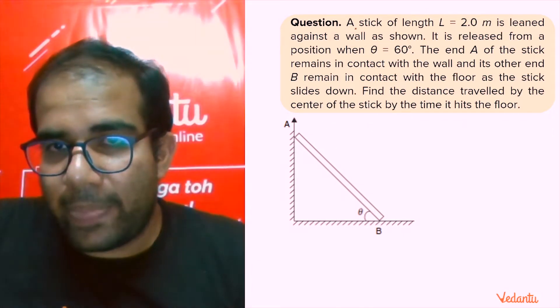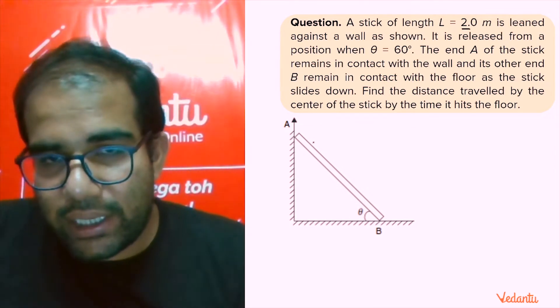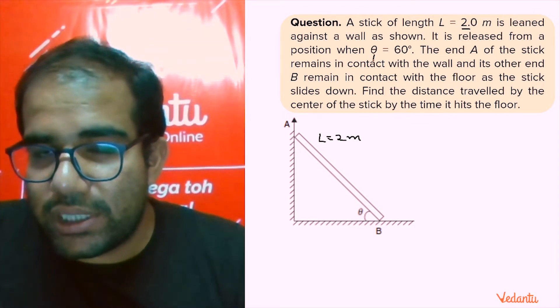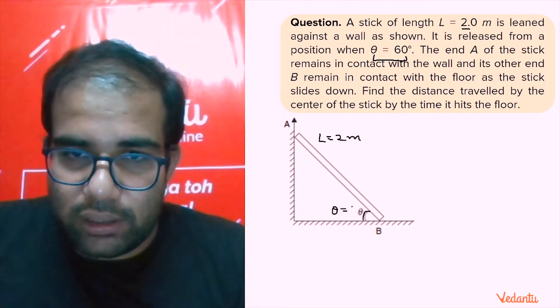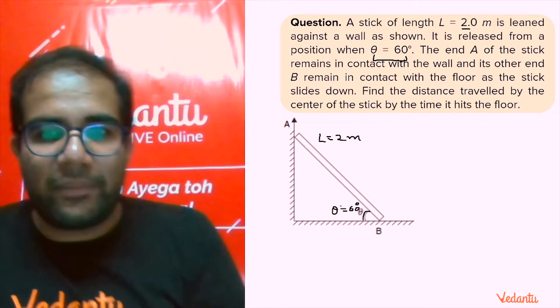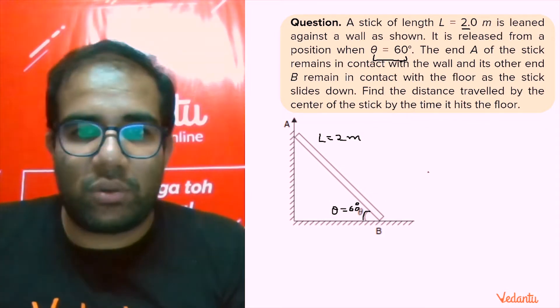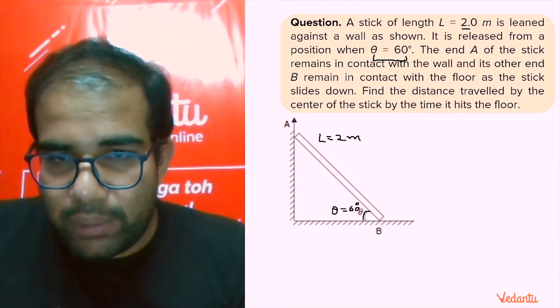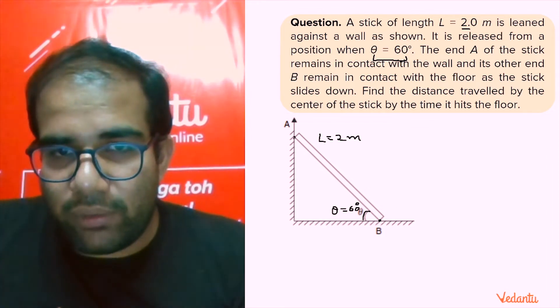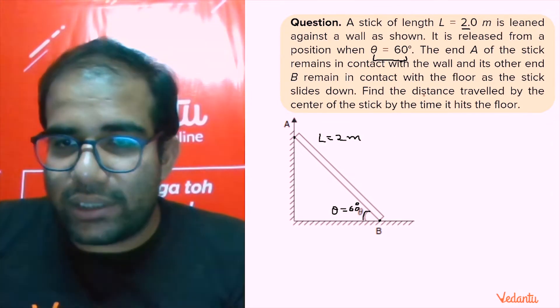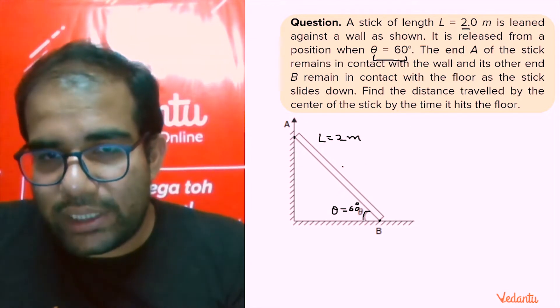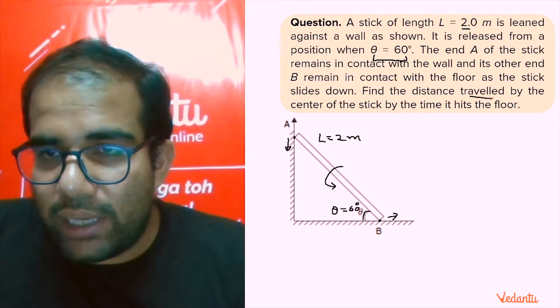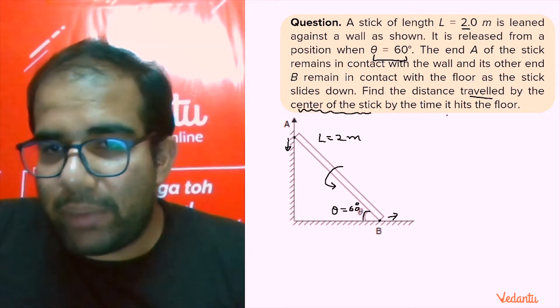See students, a stick of length 2 meters is leaned against a wall and it is released from this position at theta equal to 60 degrees. The end A remains in contact with the wall and its other end B remains in contact with the floor as the stick slides down. You can feel that this end will go that side and that end will come in the downward direction.